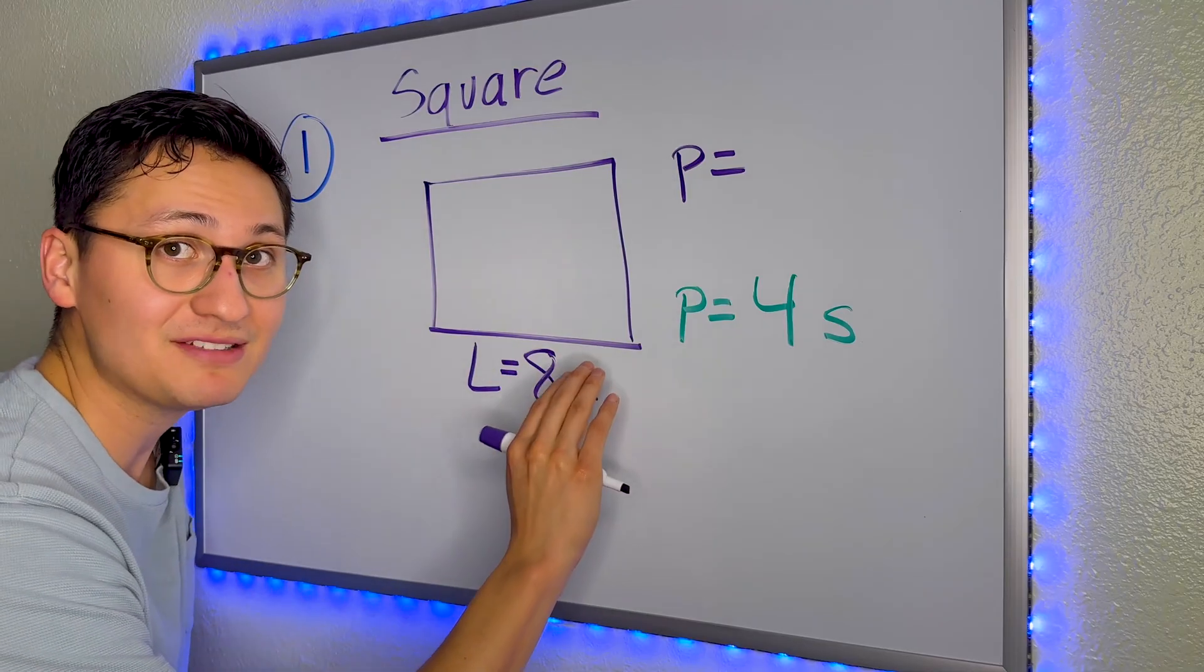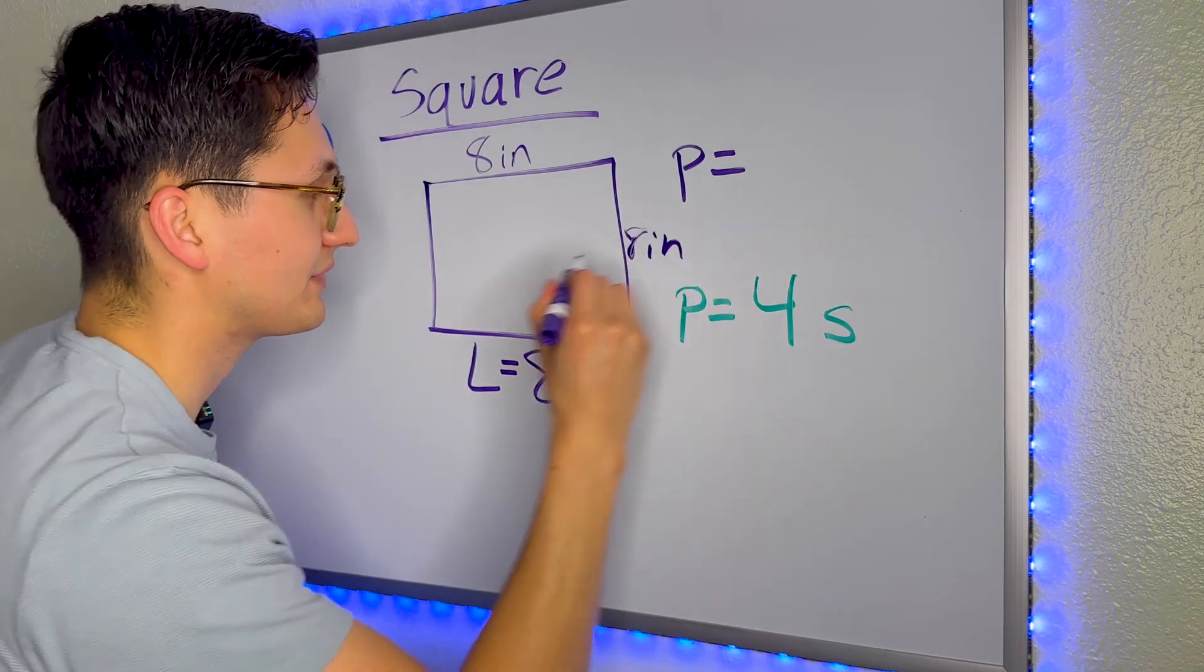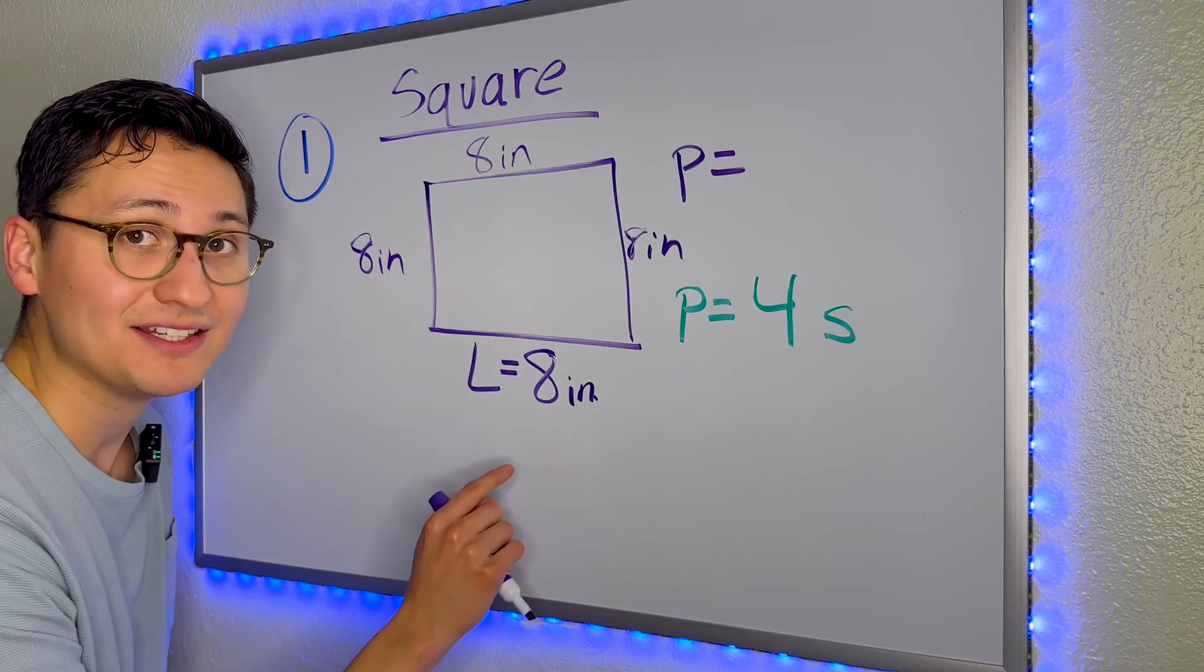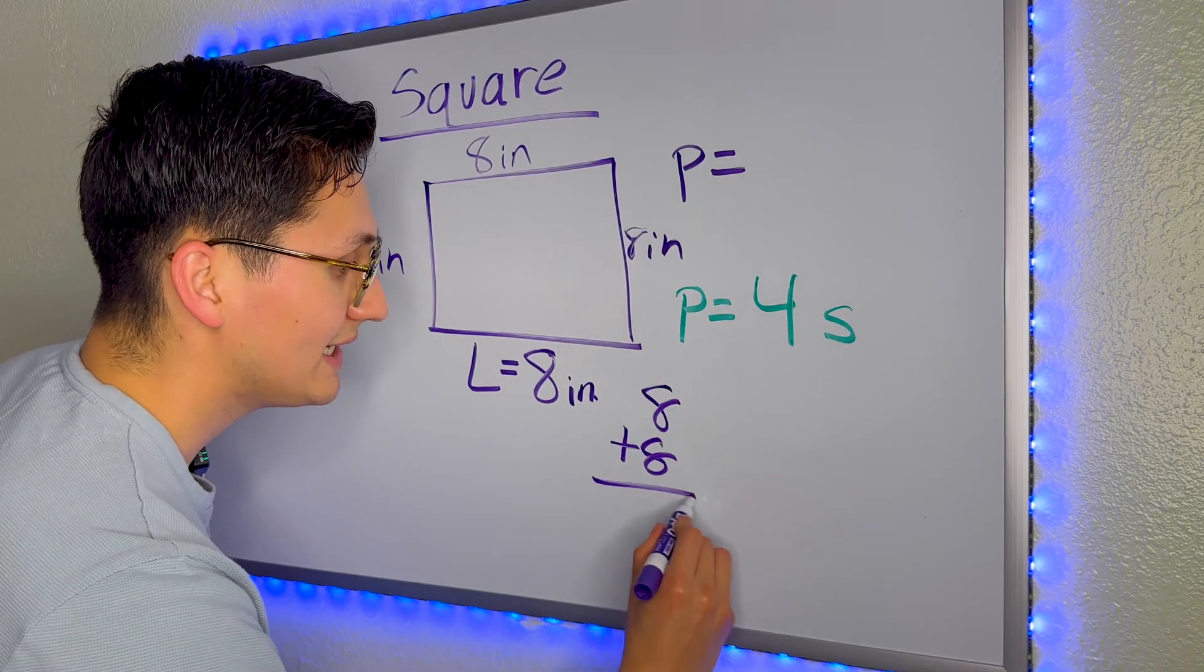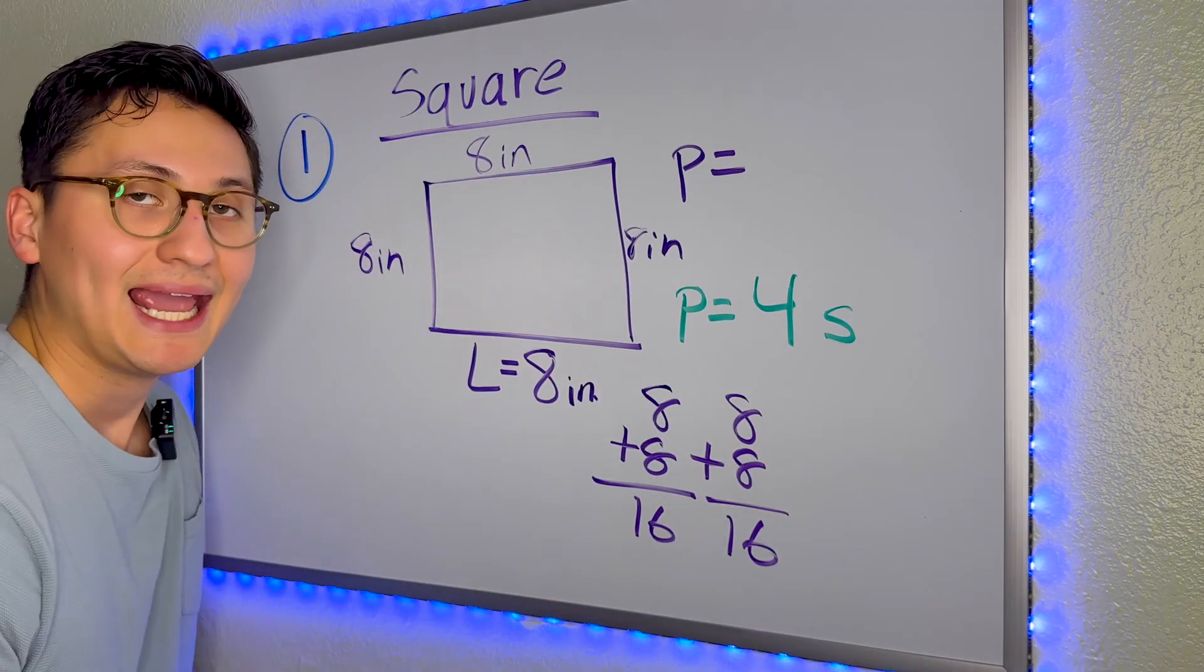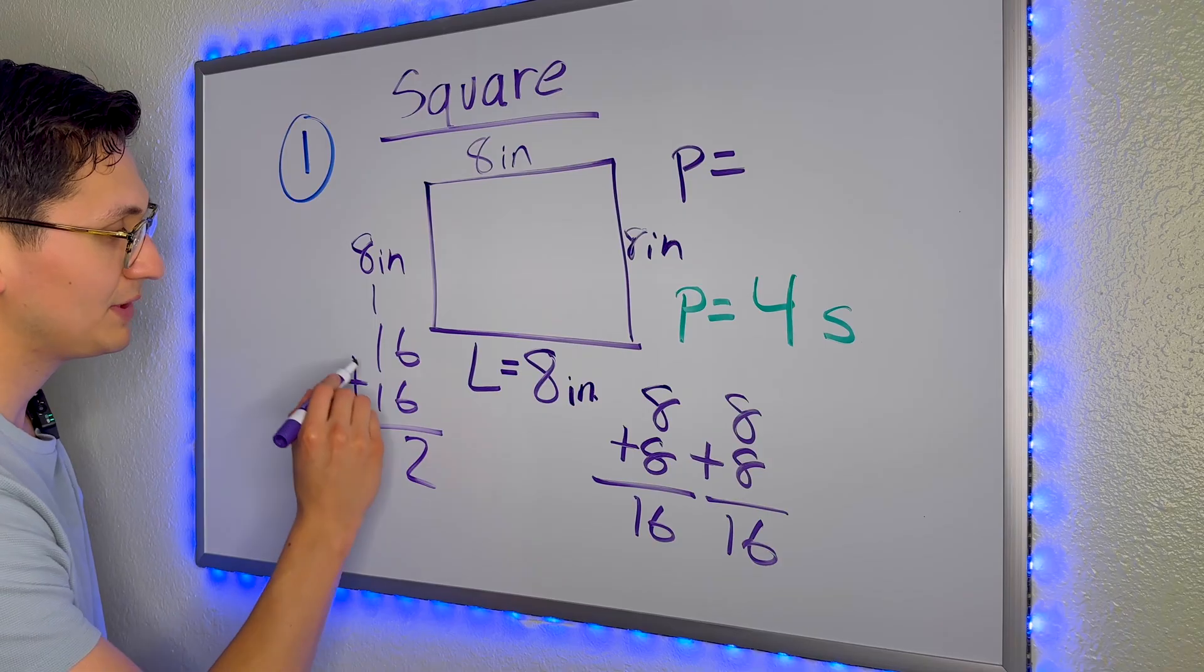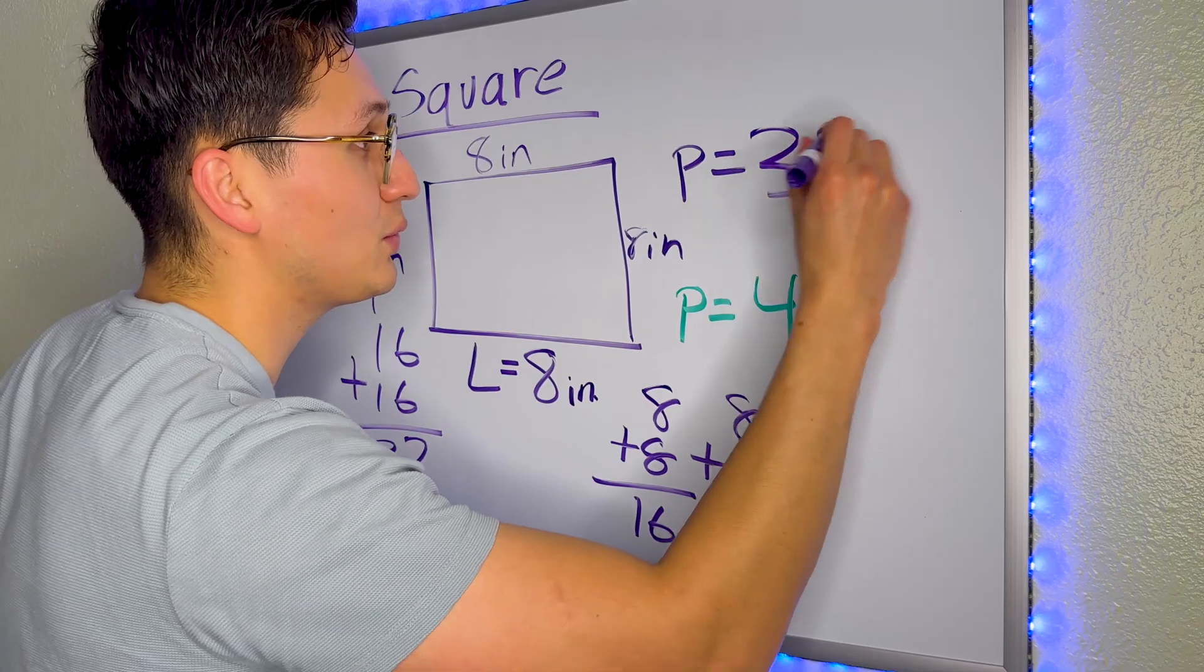So if the bottom is eight inches, so is the top, so is this side, and so is this side. And in order for us to find perimeter, we must add all the sides. So we can go ahead and do that. We can do eight plus eight is 16, eight plus eight is 16. And now we have to combine it. So 16 plus 16 will give us 12. One plus one plus one is 32. So that is one way to do it.